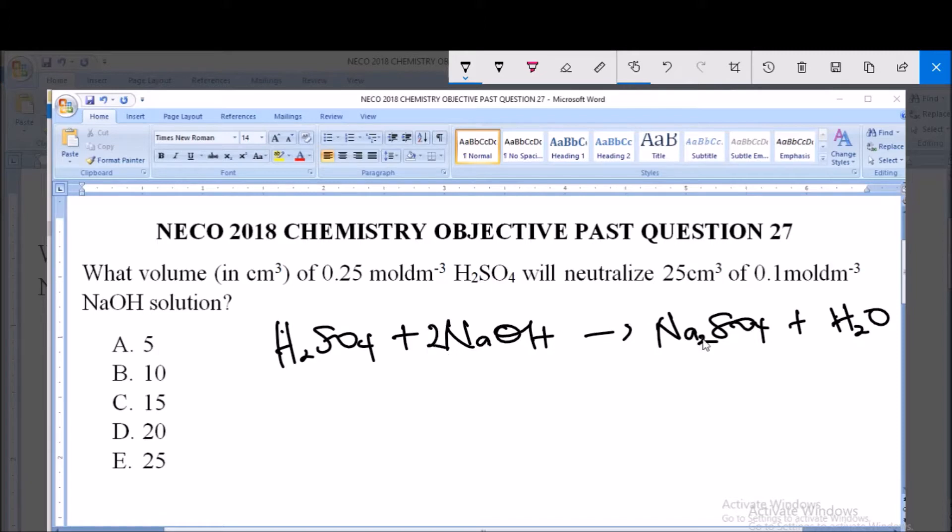We have two here and then we have two here. Now this is a balanced reaction. So one mole of this acid reacts with two moles of this base; it neutralizes two moles of this base.